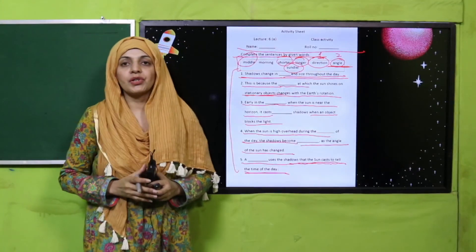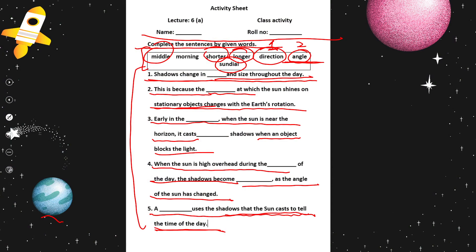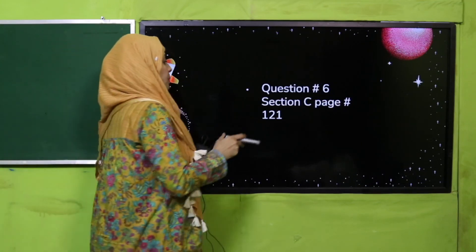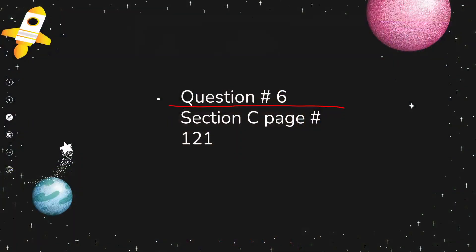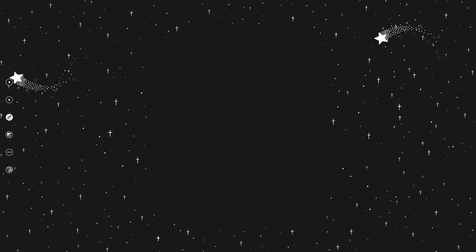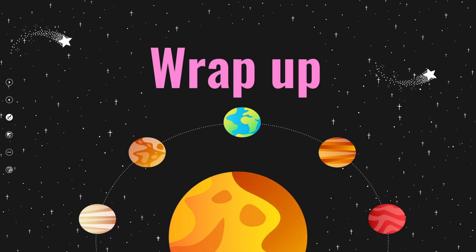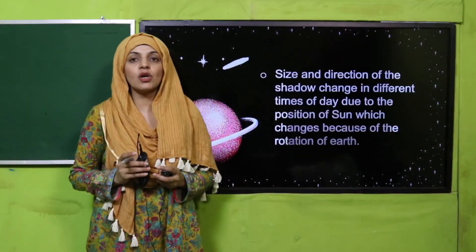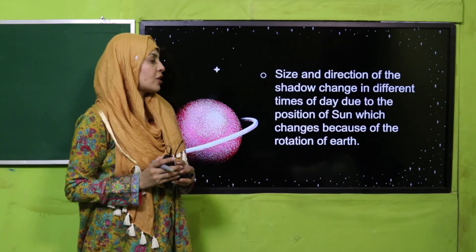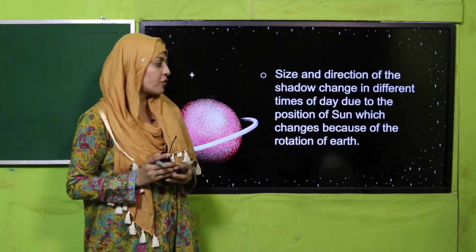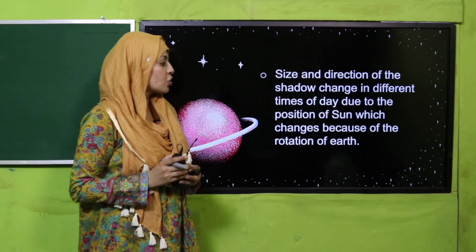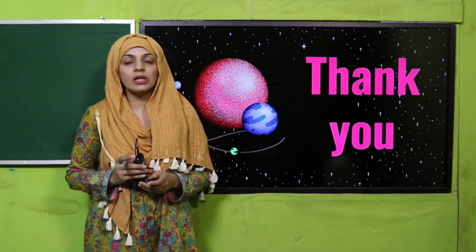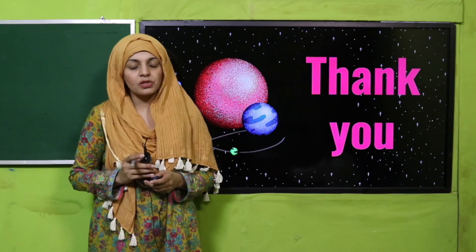Pause the video and quickly finish the worksheet. For homework, do question number six from section C, page number 121, and try to also perform the project at home on a weekend. Today we have done a class activity on shadows and learned how the size and direction of shadows change at different times of day due to the position of the sun, which changes because of Earth's rotation on its axis. Keep everybody around you safe, have a good day, thank you so much, Allah Hafiz.